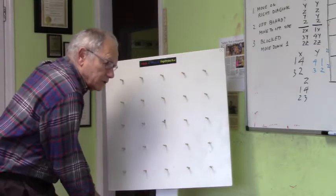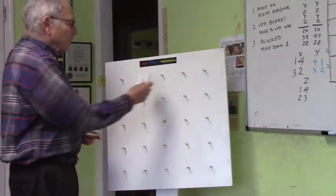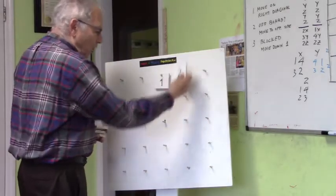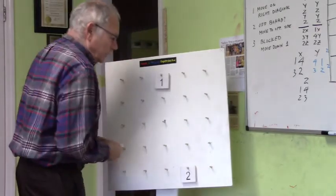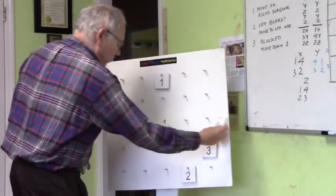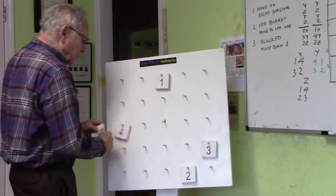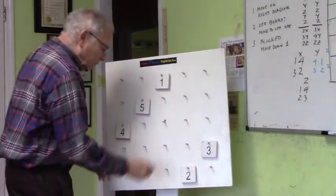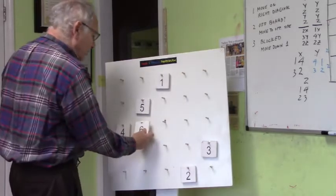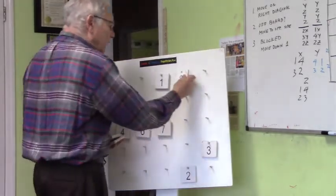So to illustrate these rules let's put the numbers in. First we put in a 1, move on a diagonal, off the board, move down 1, move on a diagonal again, but we're off the board so we move over. Continuing moving on a diagonal, we now find that we want to put the 6 in — we're blocked, so we drop down 1. Continuing along on the diagonal.